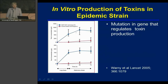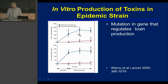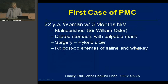In this diagram, you can see that with normal toxin production from a non-NAP1 strain, the levels of toxin are relatively low, but with this gene mutation the organism produces 20 to 30 times more toxin, and that may be why it is so virulent.